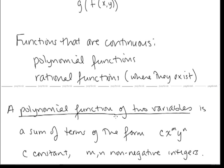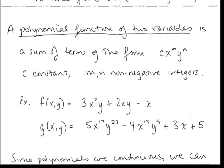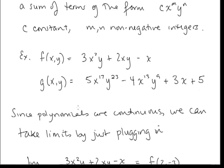Some functions we know are continuous are polynomial and rational functions. A polynomial function of two variables is a sum of terms of the form c·x^m·y^n, where c is a constant and m, n are non-negative integers. Since polynomials are continuous, we can take limits by just plugging in.